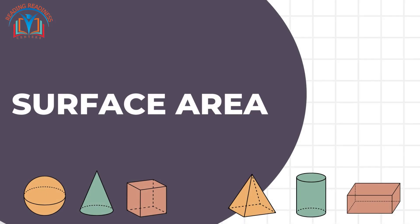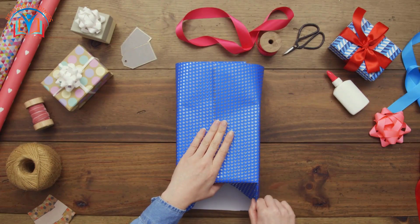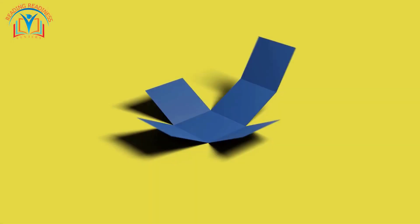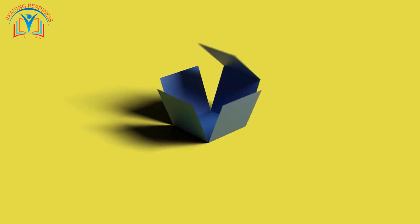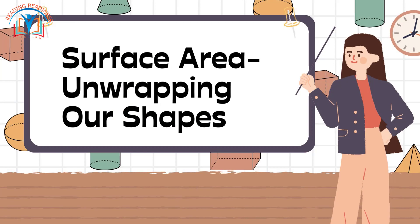Our adventure begins with the surface area, the outer wrapping of our solid figure. Picture it as the fancy gift paper that covers the entire shape. Our first protagonist is the mighty cube. Surface area: unwrapping our shapes.